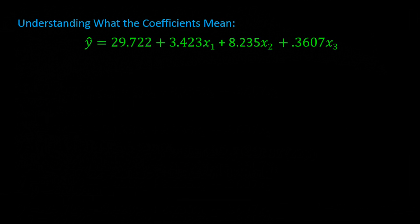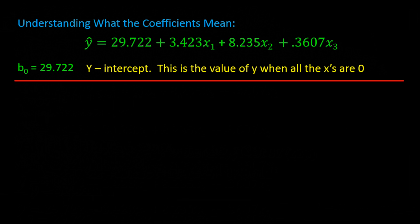Now let's talk about what these coefficients mean. B-naught is the y-intercept, so it is the value of y when all of the x's are zero. In multiple regression, this number doesn't always make sense — as you can see, an age of zero is obviously not possible. So it is really the point where, if we extend the line to cross the y-axis, where it would hit the y-axis. The next value in the regression line is B1, and that is 3.423.